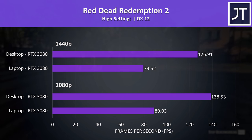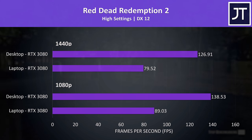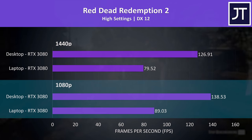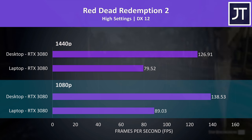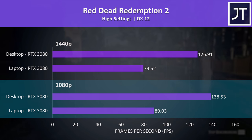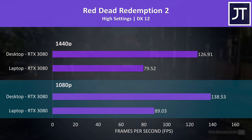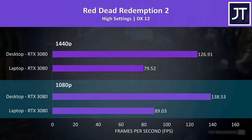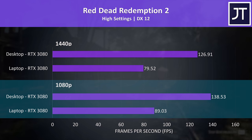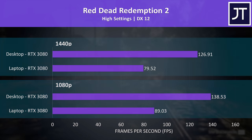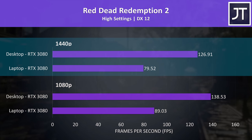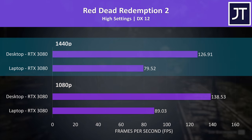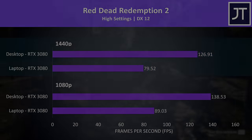Red Dead Redemption 2 was tested with the game's benchmark. At 1080p the desktop 3080 was reaching 56% higher average FPS compared to the laptop 3080 — the third biggest difference at this resolution out of all 17 games tested — but then at 1440p the desktop was nearly 60% ahead, the biggest difference out of all games tested.